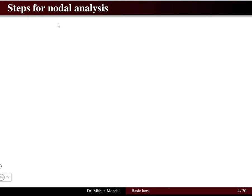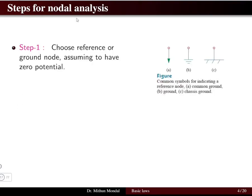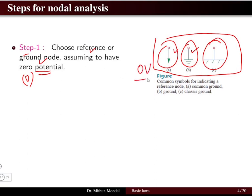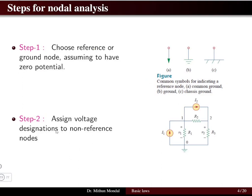The first step is choosing the reference node, also called the ground node, because its potential is assumed to be zero. Different symbols are used to represent ground — the common ground symbol, the chassis ground, and others. It doesn't matter which symbol is used; the main idea is to assign zero volts to the reference node.